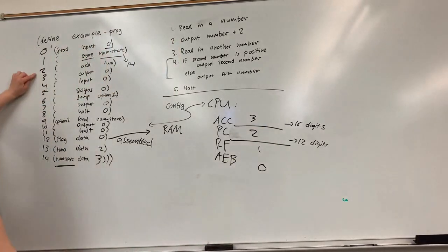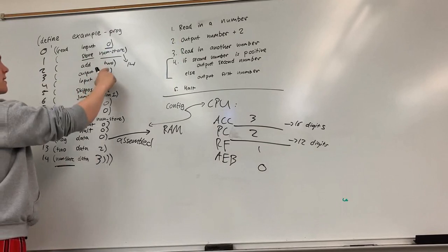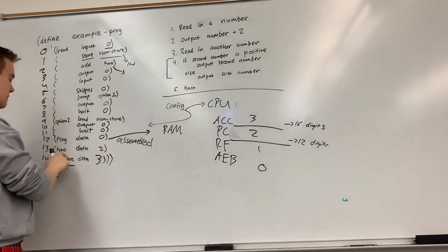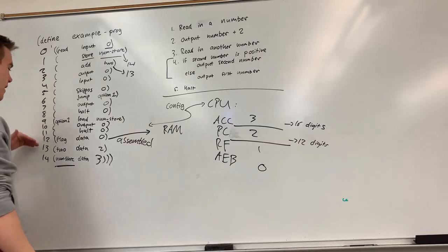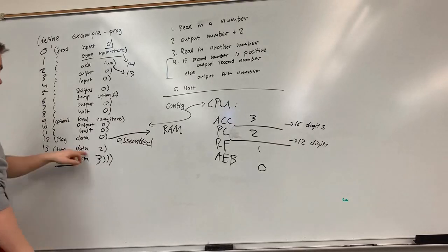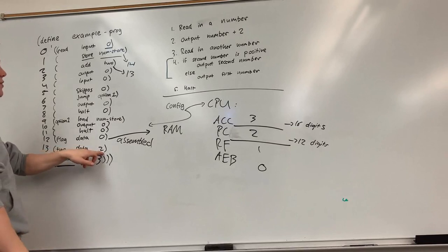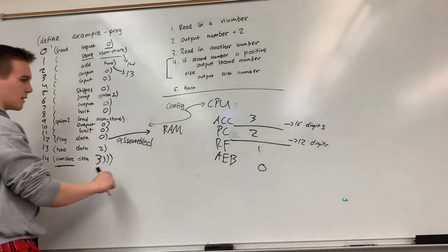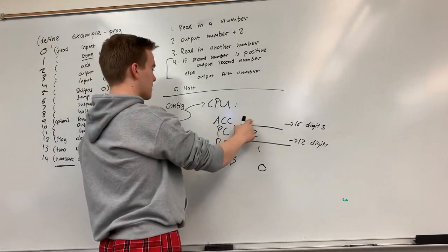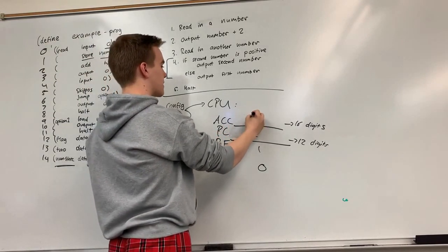My program counter moves to two. I do the second instruction add two. So again add takes an address. Here two actually means the 13th part of the RAM like an index at zero. So here I have in data I have the number two so it'll add two to the accumulator. So instead of three now we'll have the number five here.